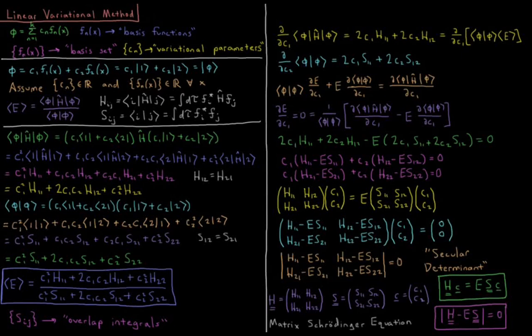This video will discuss the linear variational method for computing approximate wave functions of quantum mechanical model systems for which we cannot compute the exact solution. This video looks very intimidating from the offset with all of the writing on here, but it's not as bad as it looks, so let's take it through step by step.